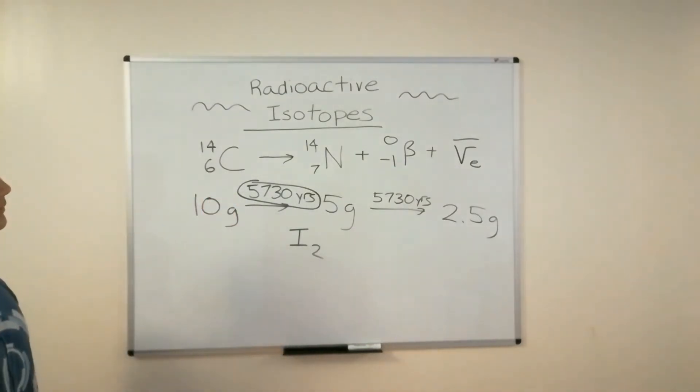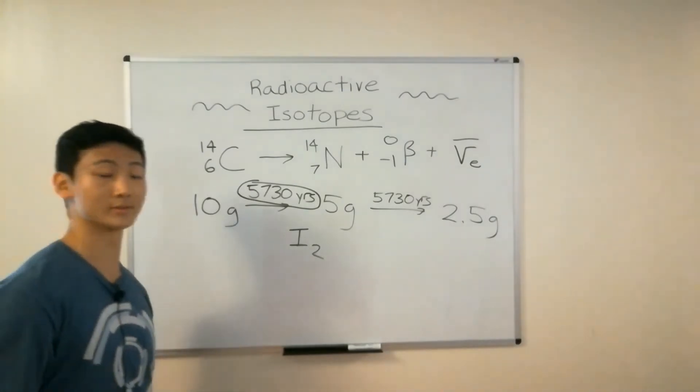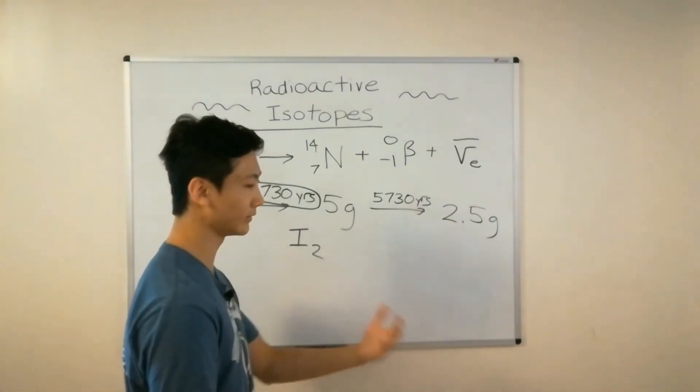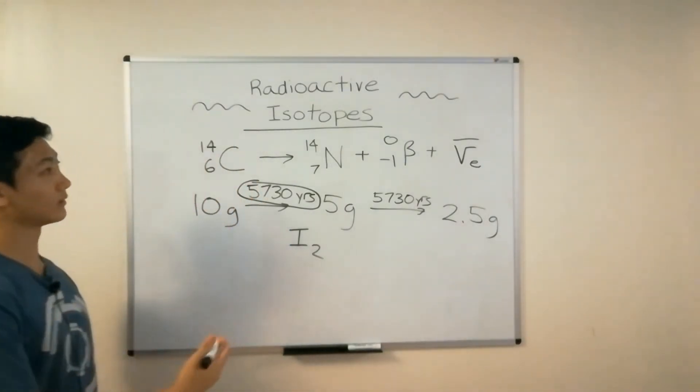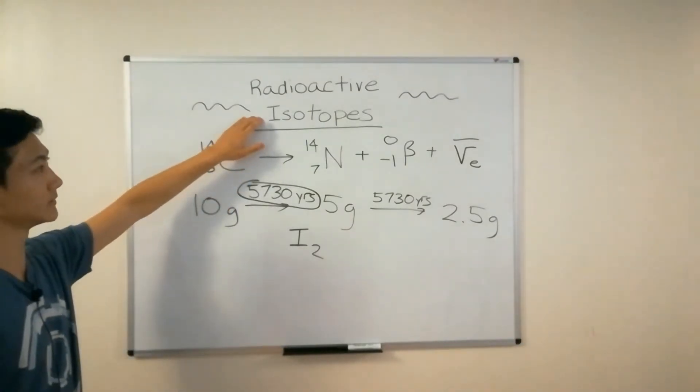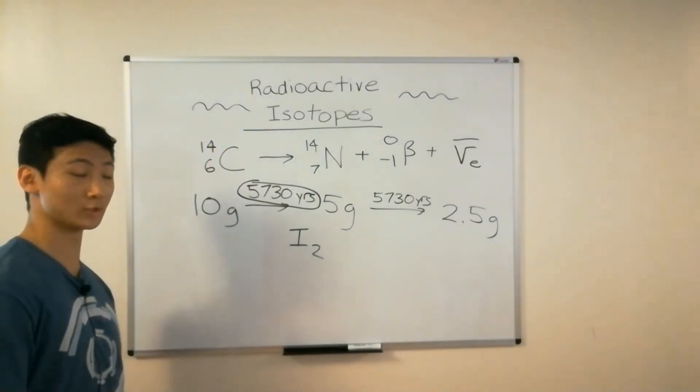Now, radioactive isotopes can also be used to cure things like cancers, so things like leukemias, things like melanomas, breast cancers. Those are all targets of radioactive isotopes that doctors can use to treat you.